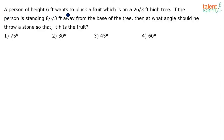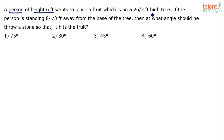A person of height 6 feet wants to pluck a fruit which is on a 26/3 feet high tree. The person is standing 8/√3 feet away from the base of the tree. At what angle should he throw a stone so that it hits the fruit? This is the same concept of heights and distances where we use the trigonometric ratio tan θ, presented in an interesting fashion.